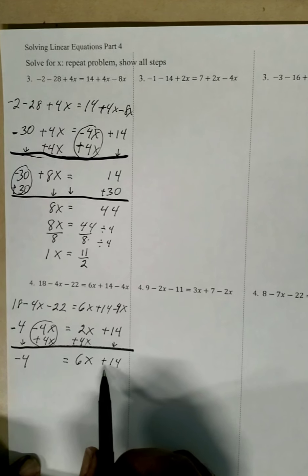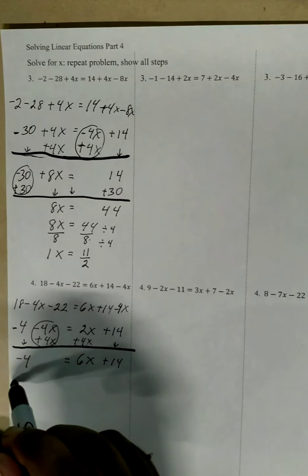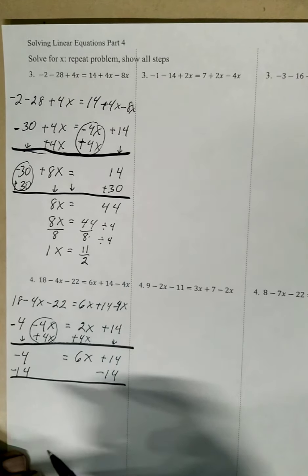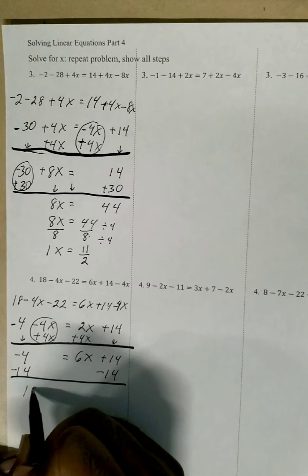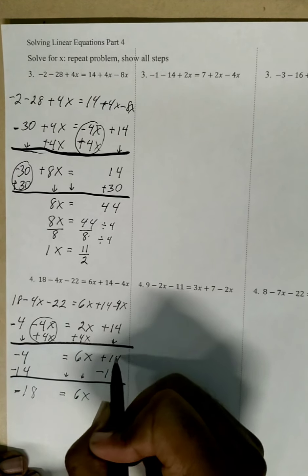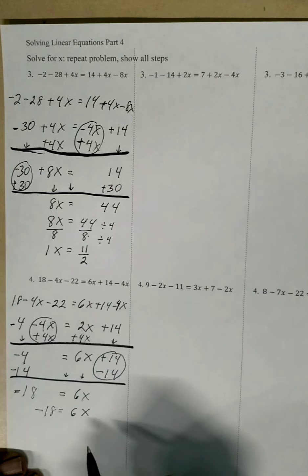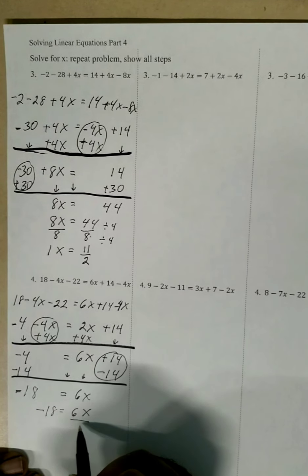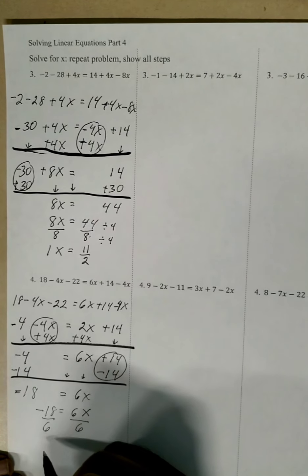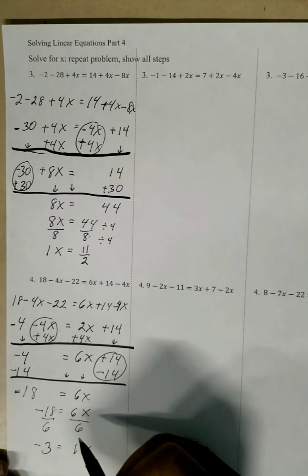This is a right side problem. We have to get rid of the positive 14 and the multiplying 6. To get rid of the adding 14 we do subtracting 14, and what we do to one side we do to the other. Same signs add so we get negative 18. The equal sign comes down, 6x comes down, and these two become zero. So now we have negative 18 equals 6x. We divide both sides by 6. Negative 18 divided by 6 is negative 3, because a negative divided by a positive is negative. 6 divided by 6 is 1x. So x equals negative 3.